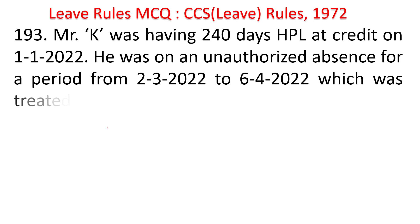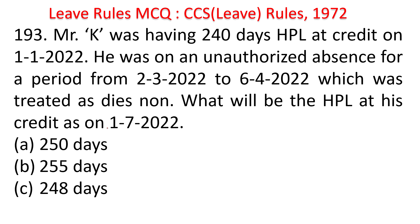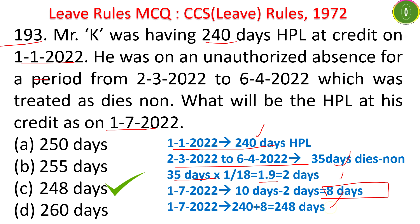Mr. K had 240 days HPL at credit on 1-1-2022. He was on unauthorized absence from 2-3-2022 to 6-4-2022 (35 days), treated as dies non. What is his HPL at credit on 1-7-2022? 35 days × (1/18) = approximately 2 days deducted from the normal 10 days credited = 8 days added to 240. The answer is 248 days.